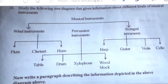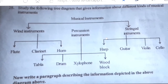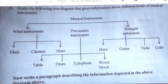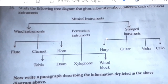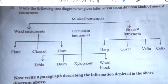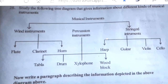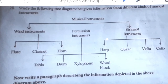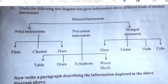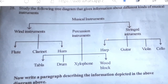Now I write a paragraph describing the information depicted in the above diagram. This is the 1st line. Next, the name of the diagram — this is a tree diagram. It gives information about different kinds of musical instruments.